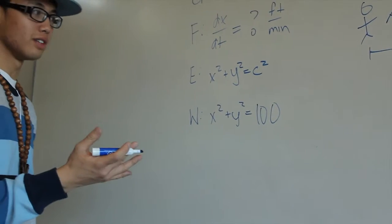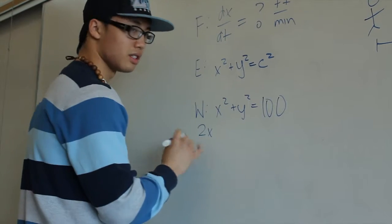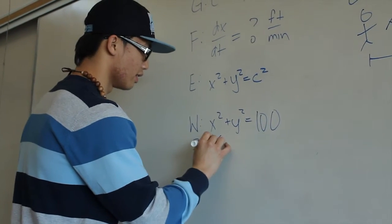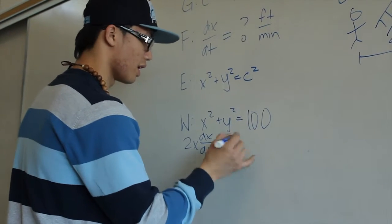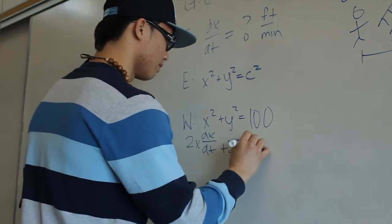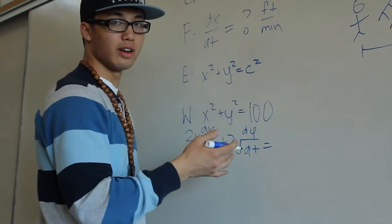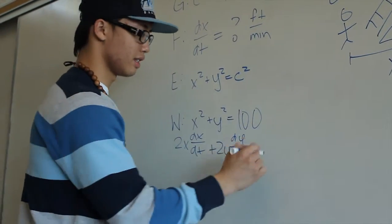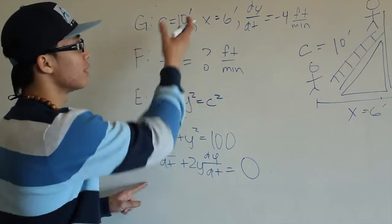Now we can differentiate the problem. The derivative of x squared, which can be turned into 2x dx dt, plus 2y dy dt. And the derivative of 100, which is a constant, is going to be 0.